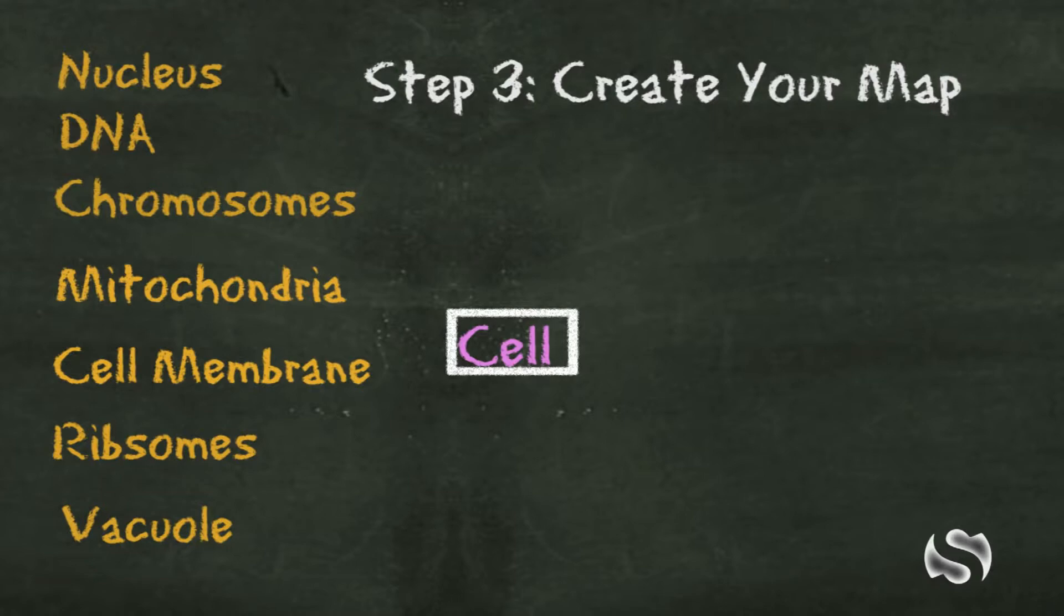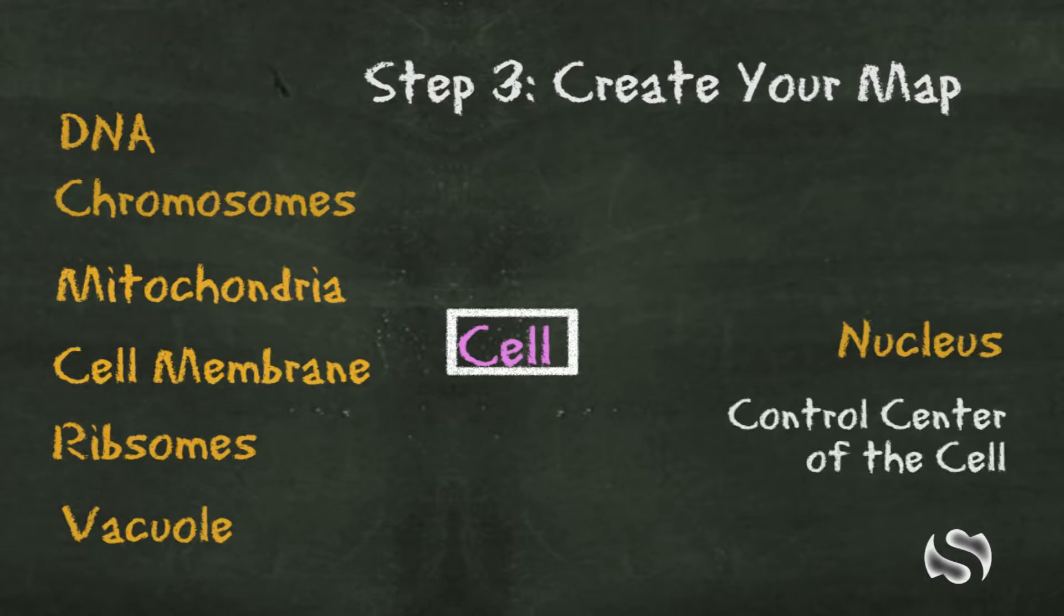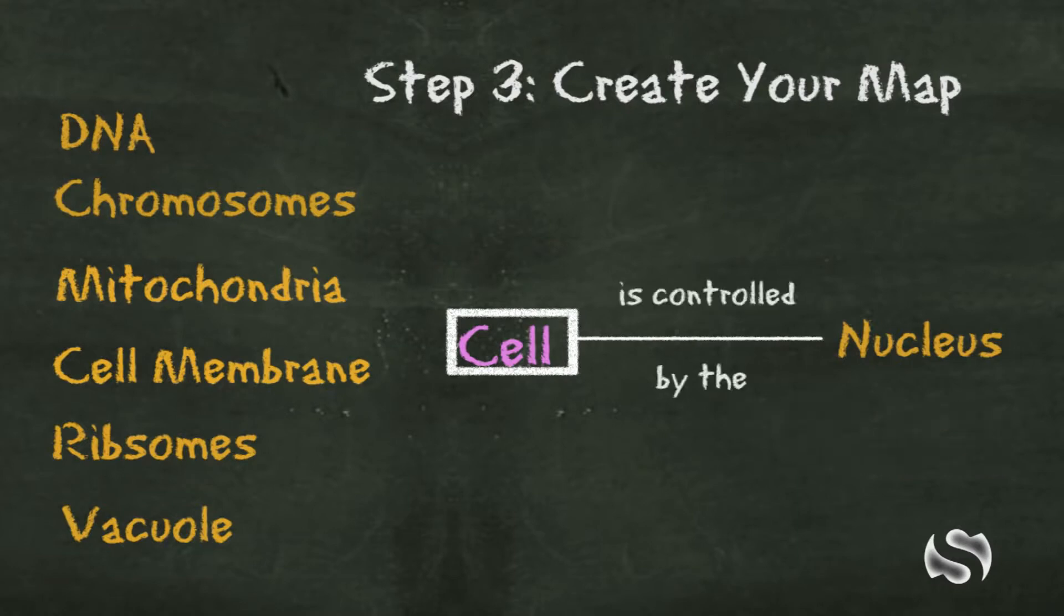So for example, we'll start with the nucleus. So this is the control center of the cell. So if we connected it to the cell in a concept map, we might say that the cell is controlled by the nucleus. And the nucleus would go in a circle because that's a key idea.